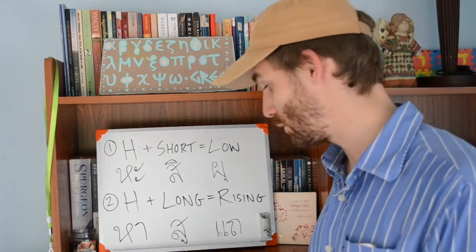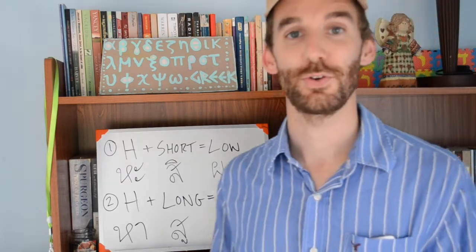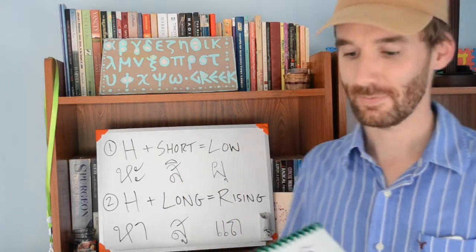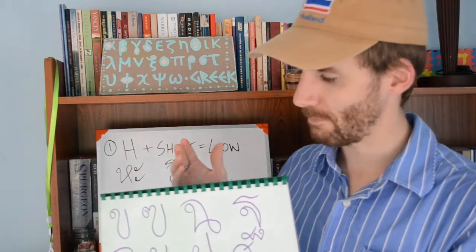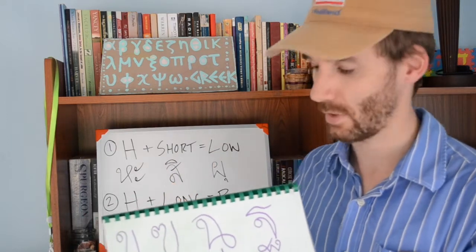Before we jump into looking at the rules, I've got to introduce to you what the high class consonants are. There's 11 consonants in the high class, and we'll just go through these before we jump into the rules.